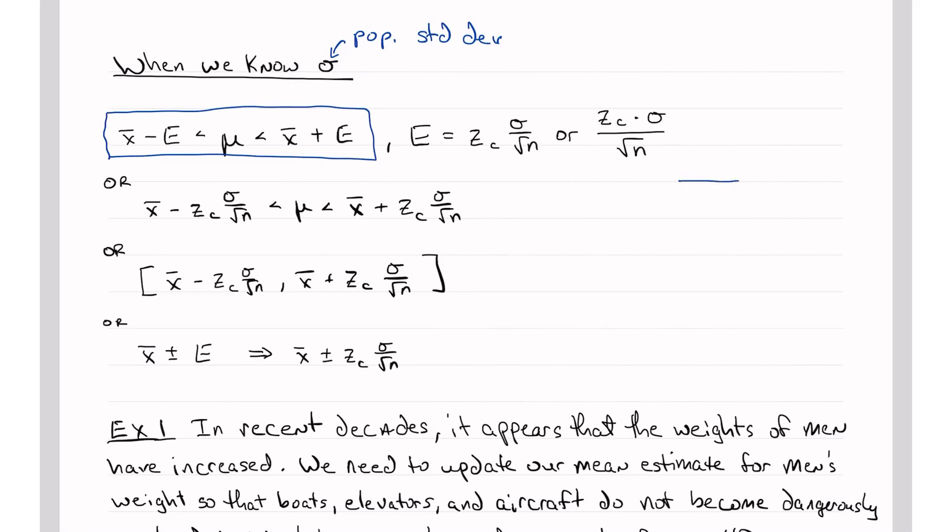And if you recall, what this means is that if we have some distribution of x with mean mu, and this is actually going to be the distribution of x-bar, then we're going to find two values here. This will be x-bar minus E, and this will be x-bar plus E, such that the area between them is c. That's what we want to know.